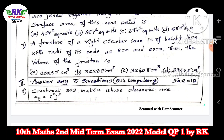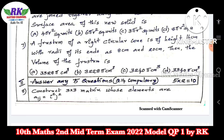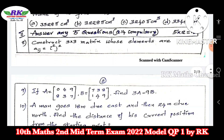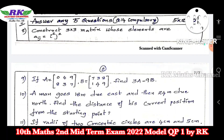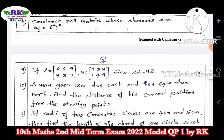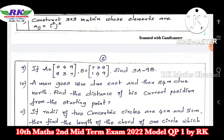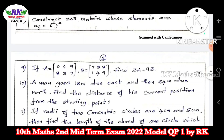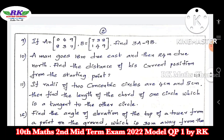Question number 8: construct a 3×3 matrix whose elements are A[i,j] = i² + j². Question number 9 and 10: A and B are two 2×2 matrices, find 3A minus 9B. Question number 10: a man goes 18 minutes due east and then north — this is a theorem problem from the first exercise.